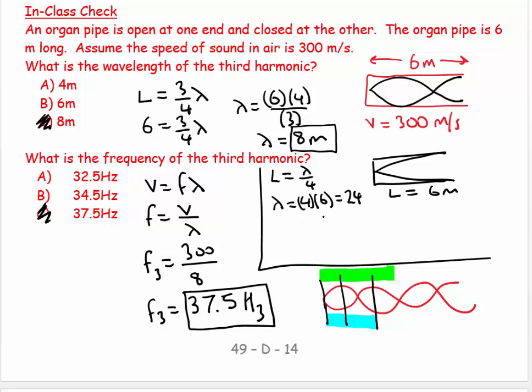So you can say lambda for this wave is equal to 4 times 6, which equals 24. Then you say V equals F lambda, so you say F is equal to V over lambda, which equals 300 over 24. I've got to get my calculator out for that. 300 divided by 24 is going to equal 12.5.